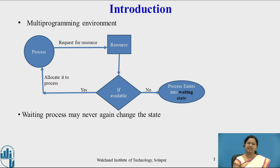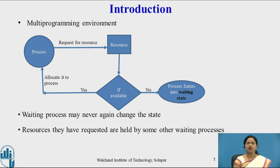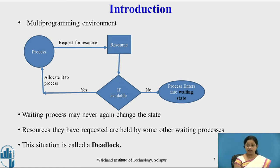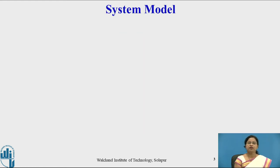But if the resource is not available, the process enters into the waiting state because it cannot continue its execution. The process may remain in the waiting state for a long period of time. Resources requested by one process may be held by another waiting process, and due to this situation all processes may enter into the waiting state — this is called a deadlock.